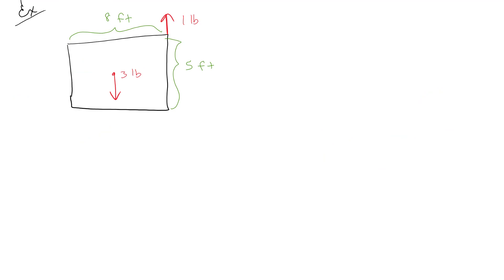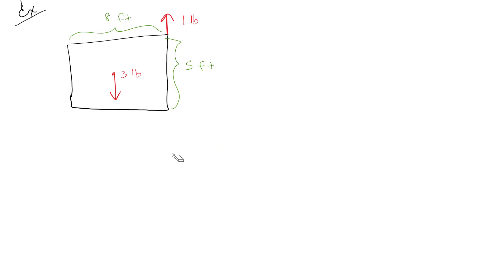Now let's do another example where we actually have rotation. This time we have the same block but only one cable, so it's going to swing and rotate. In this case, alpha is clearly not going to be zero — there will be some angular acceleration of the block.